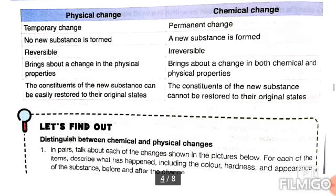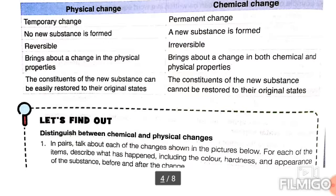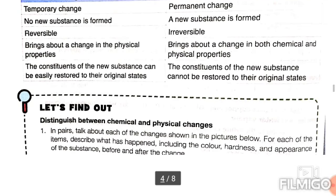Physical change brings about a change in the physical properties, but chemical change brings about a change in both chemical and physical properties. In physical change, the constituents of the new substance can be easily restored to their original states, but in chemical change, the constituents of the new substance cannot be restored to their original states.